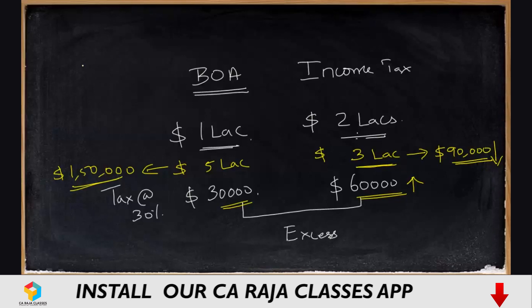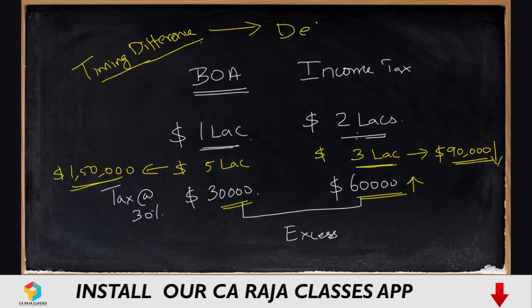All of this happens because of what is known as timing differences. This is what we are going to learn in this course — what are timing differences? Because of timing differences, we defer our taxes: something may be paid in advance, something may be paid in the future. So there are certain different arrangements that take place, and that's what we are going to learn in detail in this course.